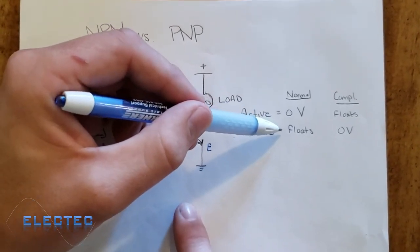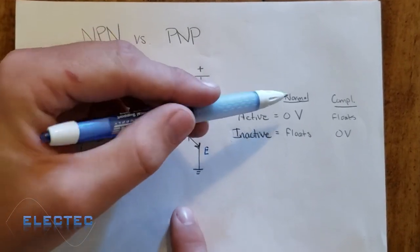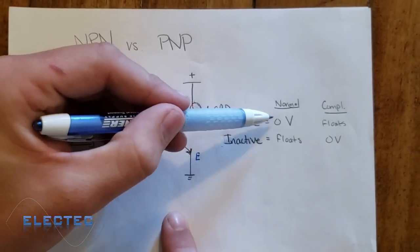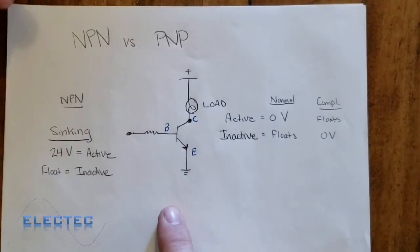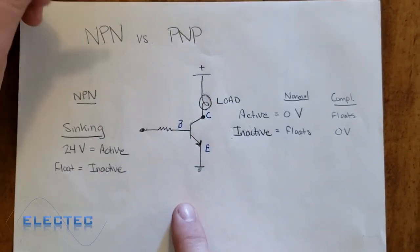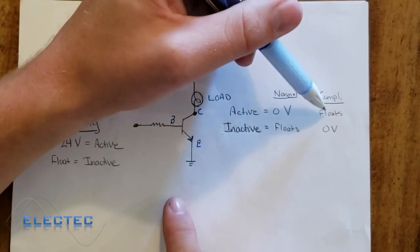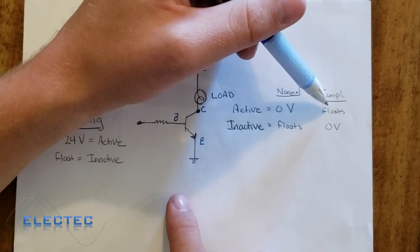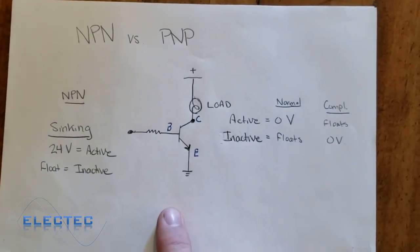That's another important point for an electrician to know. When we activate an NPN sensor, its output is zero volts. Its inactive state, it floats. Sometimes when you look at these devices also, they have a complementary option. The complementary is exactly the opposite. It floats when the transistor is active, and it switches to zero volts when the transistor is inactive.